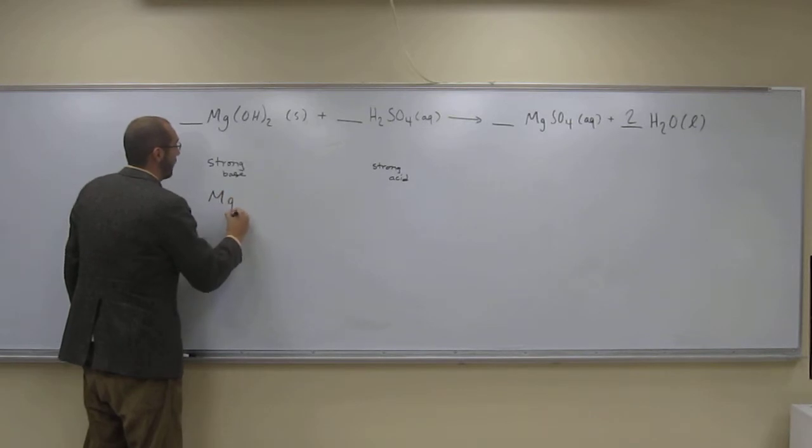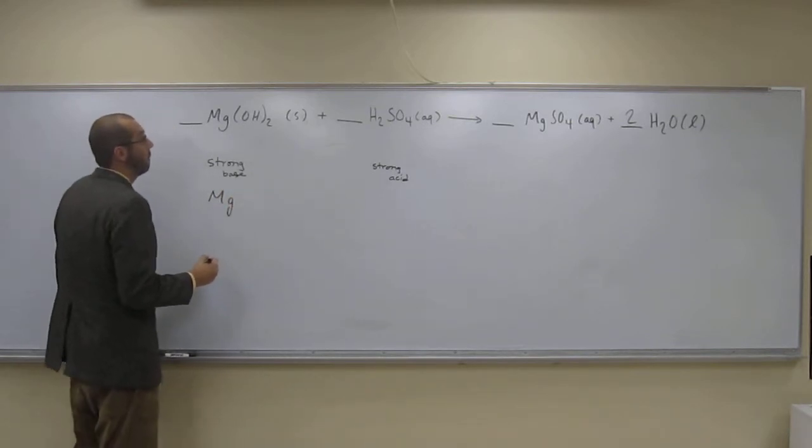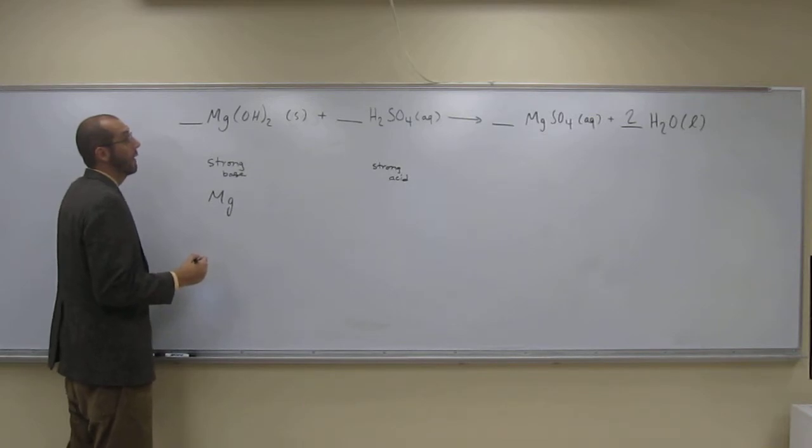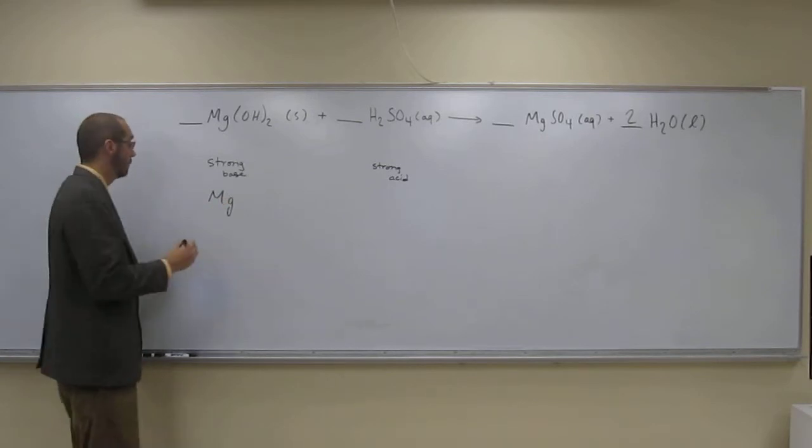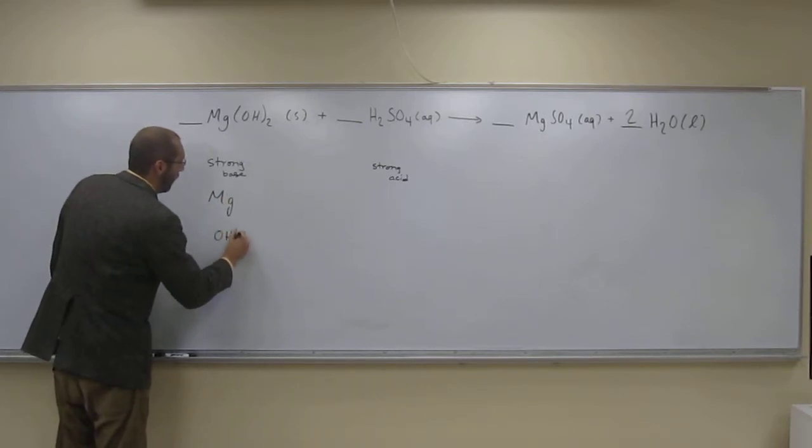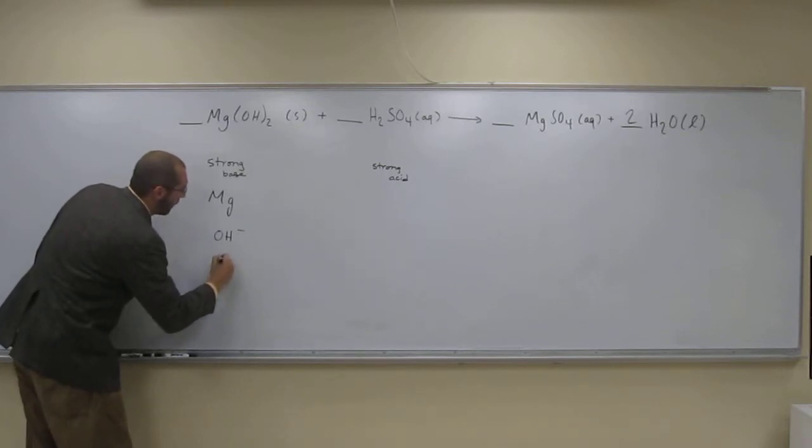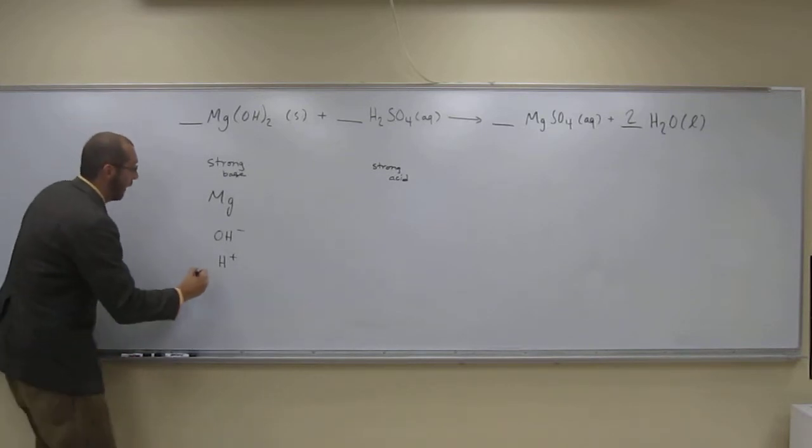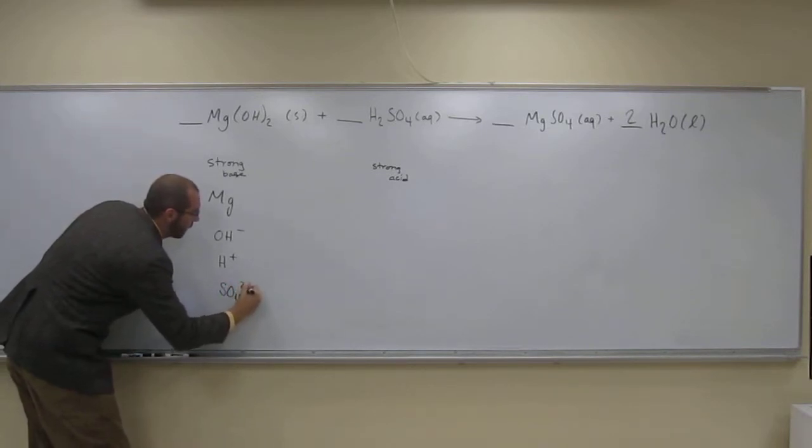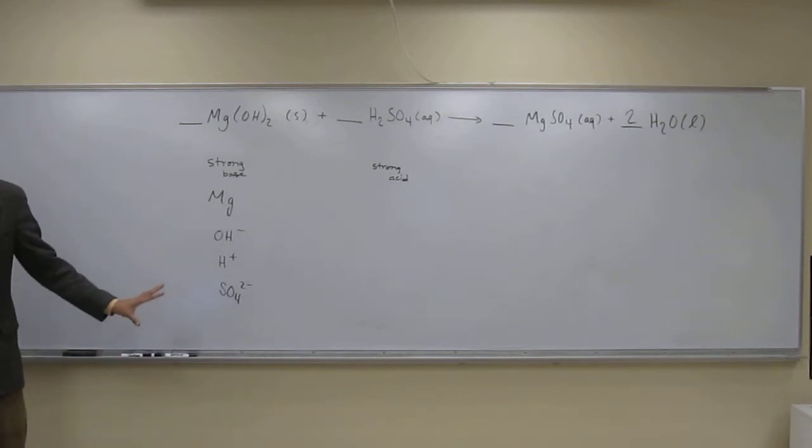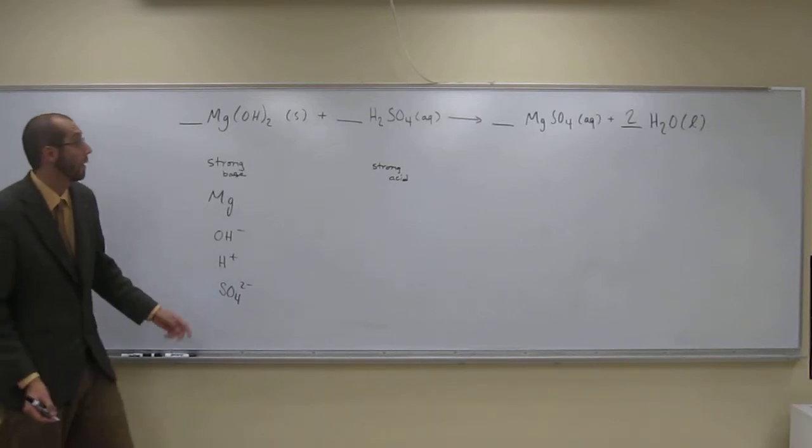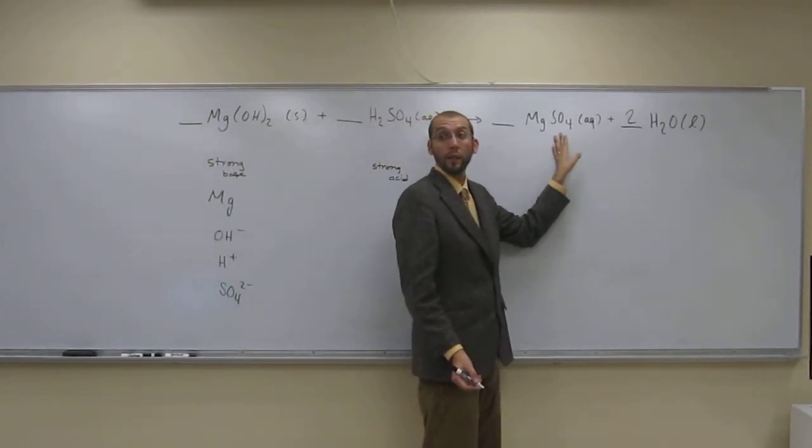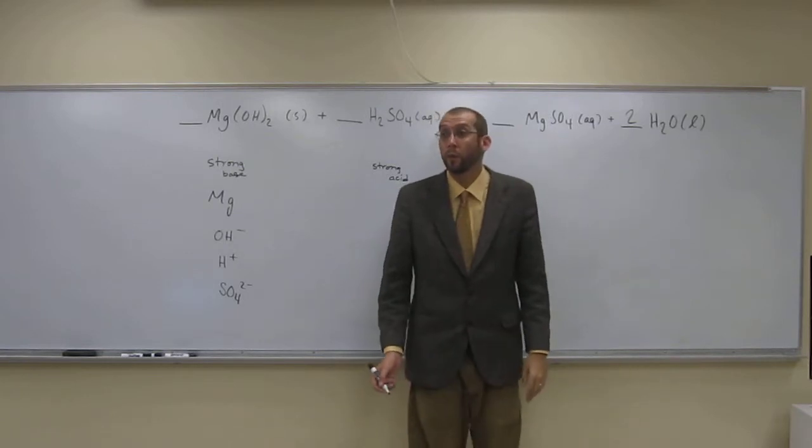So magnesium, and remember what I said with the polyatomic ions. So here we're going to have OH minus, and I'm going to say H plus like that, and then a sulfate, SO4 2 minus. You don't always have to break up the polyatomic ions there. And if you see them over here, that's the same thing like the sulfate, then you don't have to break them up.